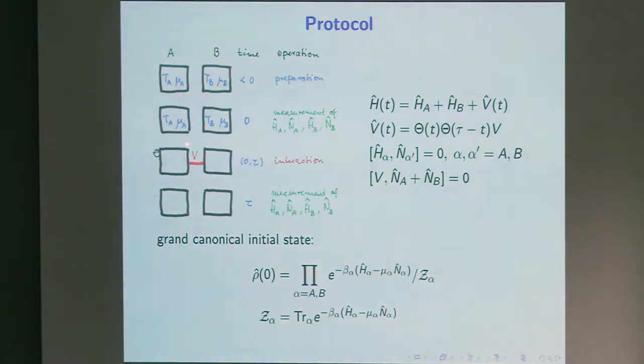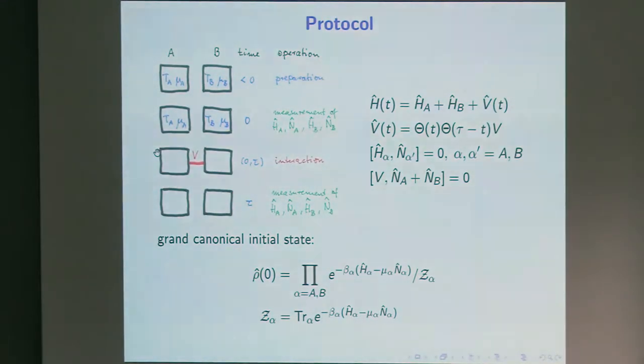Once I have done this, I write up what I have found out, I bring into contact the two systems. In the general case, this interaction could have some time dependence, but what I will consider here is the most simple time dependence, where it is exactly zero up to time t, is constant from t equals zero on, and is suddenly turned off again at some time tau. And at this time tau, the protocol is finished, and I make again same kind of measurements as I did before. That means I get the energy of the system, of the left system, or system A, energies of the right system, particle numbers of both systems.